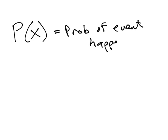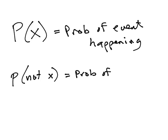Let's talk about probability and complements and how they go together. Let's refresh that P(X) is the probability of an event. So if we say P(X) is the probability of the event actually happening, then the probability of not X is the probability of the event not happening.